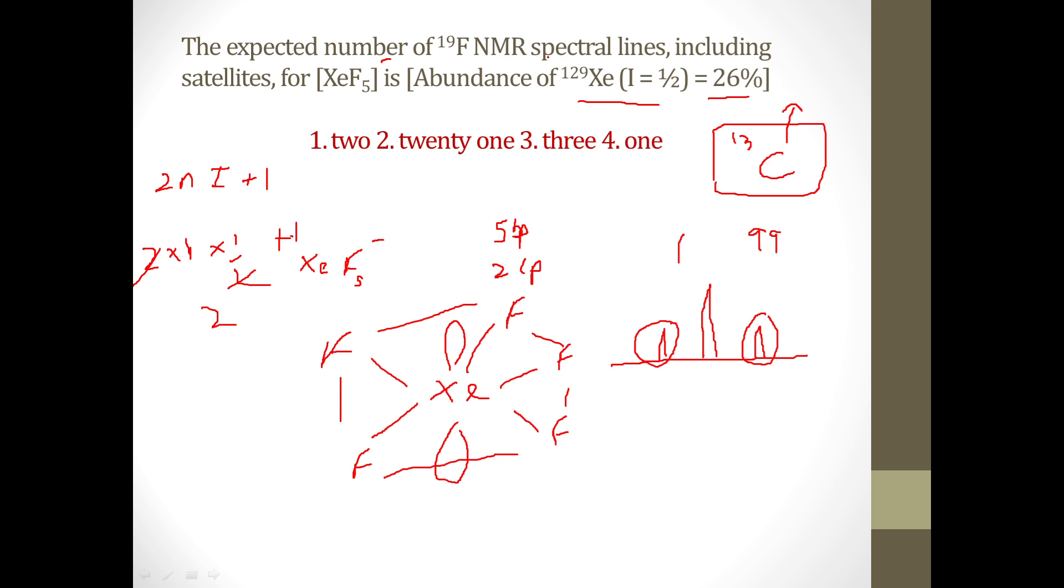So the expected number of 19F NMR spectral lines including satellites, so one is this peak and there are two satellite peaks, so the total becomes three. So the correct answer is three.